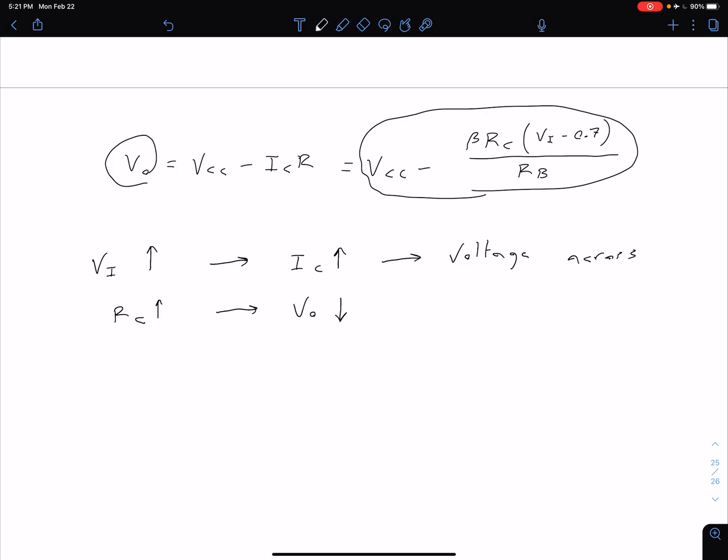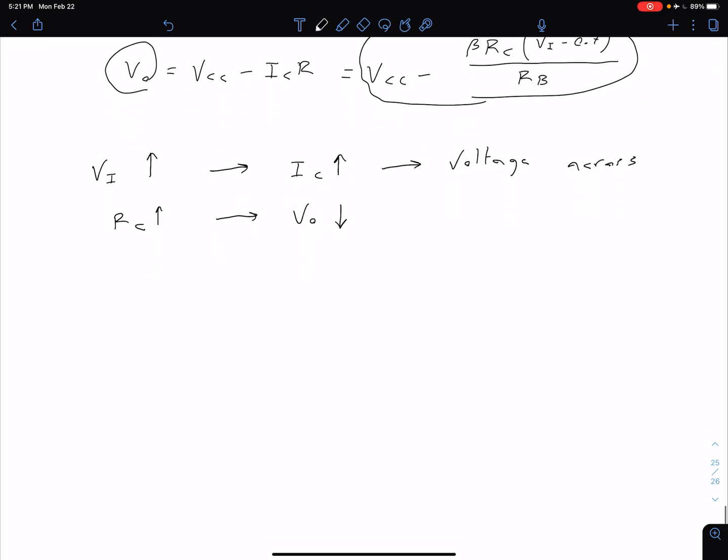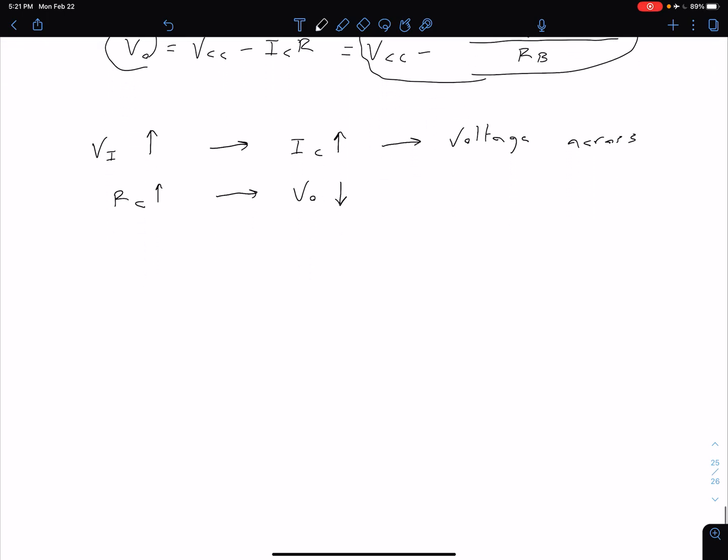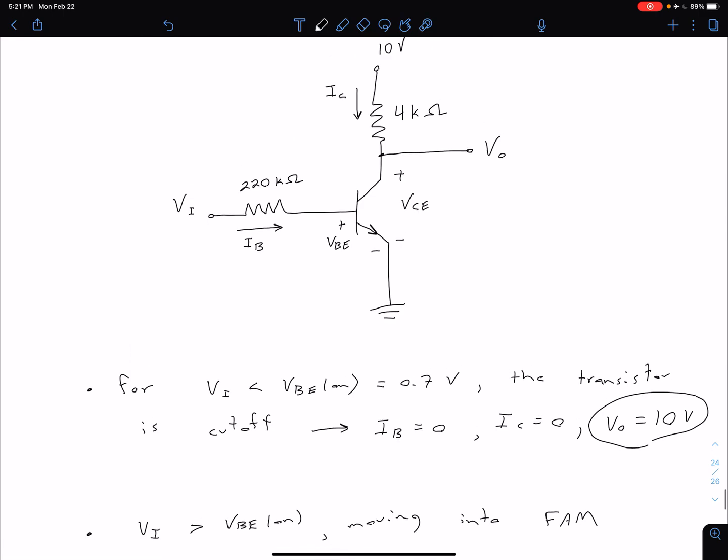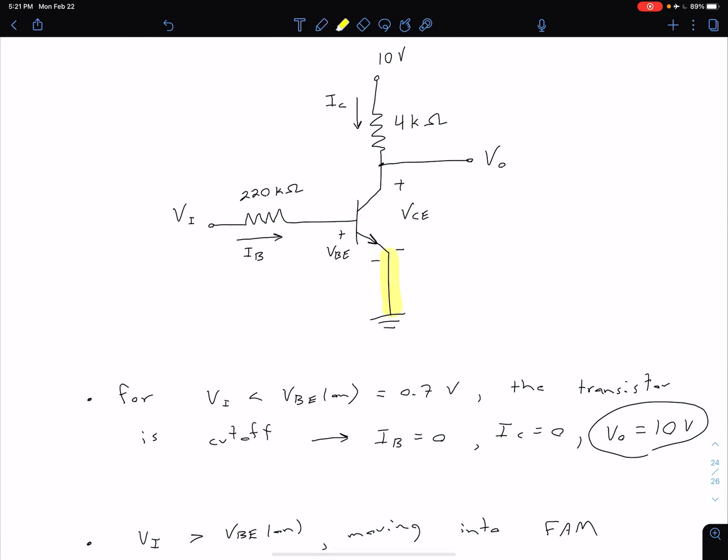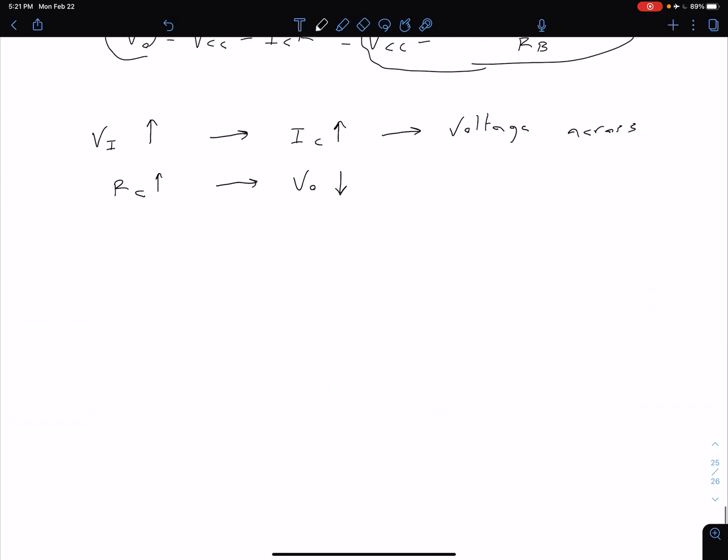At some point our output is going to be equal to VCE sat. Let me explicitly state something because we don't have anything in this emitter branch - we see that our output voltage Vout is actually equal to our collector emitter voltage VCE. Note that our output voltage is equal to VCE. So what that means is when we have that output equal to VCE sat we're going to be moving into our saturation region.